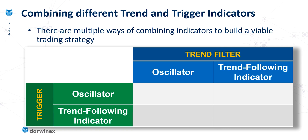In this example, I'm going to consider indicators that firstly allow us to categorize the trend of the market, and then secondly those that provide trigger signals. Throughout this series, we've always categorized indicators in terms of oscillators or trend-following indicators. So let's now look at how we might combine these into a single system.